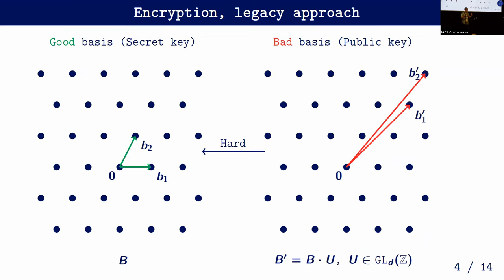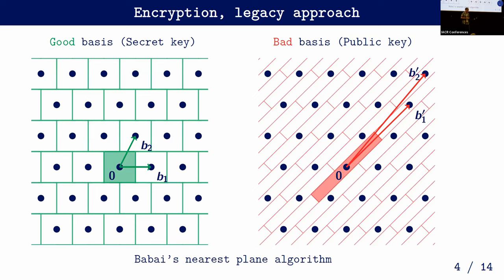How would you do encryption in general with lattices? In the legacy approach, one party has a good basis that is secret, while publicly everyone has some bad basis of the lattice. 'Good' means the vectors are short and orthogonal; 'bad' means they are long and not so orthogonal. Any two such bases differ by a unimodular transformation, and because the SVP is hard, it's hard to go from the bad basis to the good basis. Assumptions like NTRU give you a way to generate such a random lattice along with a good basis.